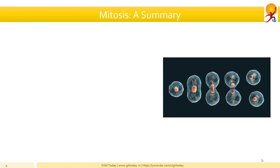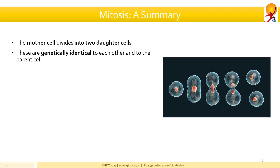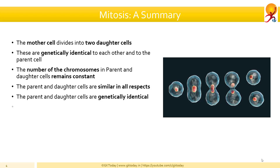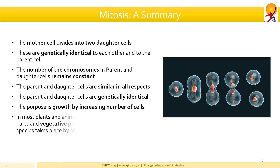So what did we learn about mitosis? In mitosis, the mother cell divides into two daughter cells, in which the mother and the daughter cells are identical to each other and the daughter cells are also identical to each other, genetically or otherwise. The number of chromosomes in parent and daughter cells remains constant. The parent and daughter cells are similar in all respects — they are genetically identical. The purpose of mitosis is growth by increasing number of cells. In most plants and animals, the regeneration of lost parts and vegetative propagation in some plant species takes place via mitosis.